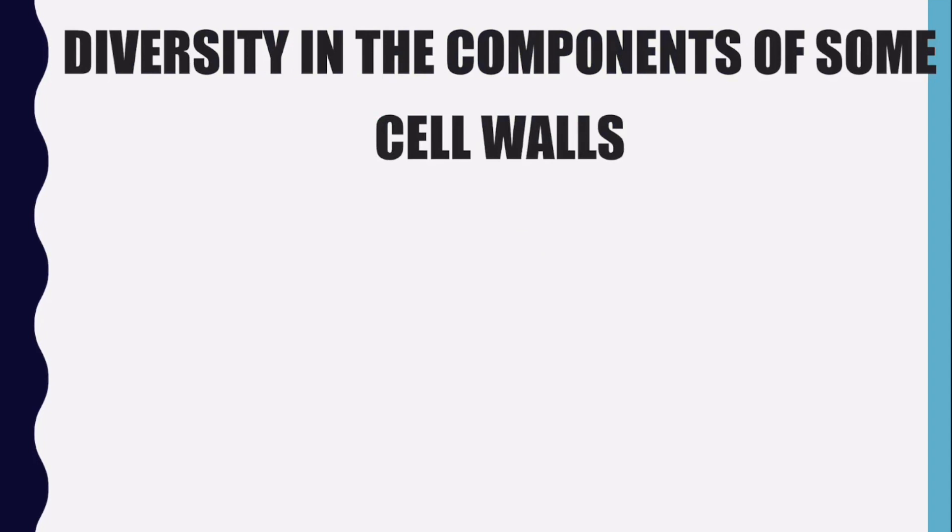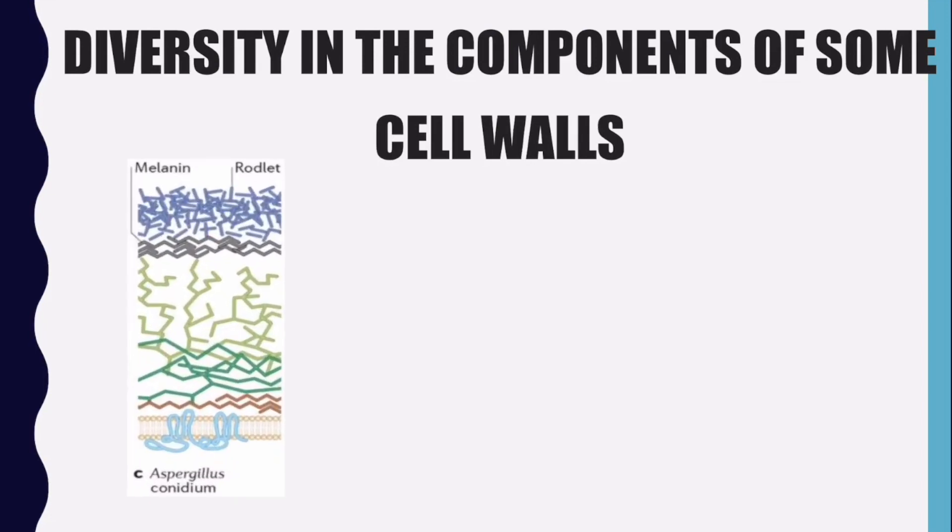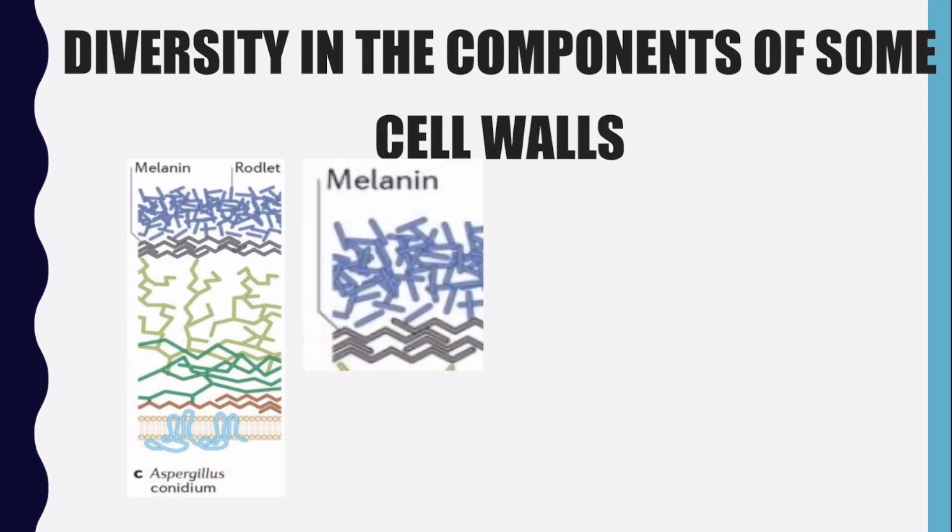Fungal cell walls can be found in many diverse forms, although they all contain glucans, mannoproteins, and chitin. However, there are many different components taking part in the cell wall depending on the fungus. For example, the cell wall of Aspergillus candidum contains melanin as another important constituent.